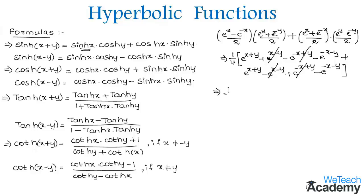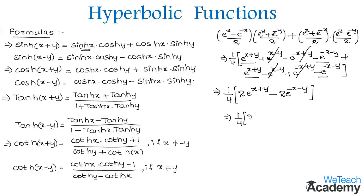We are left with 1/4 into e^(x+y) plus e^(x+y), which becomes 2 into e^(x+y). Then we have a minus sign, and by adding both the terms we get 2 into e^(-x-y). Taking 2 as the common factor, we get 1/4 into 2 into (e^(x+y) minus e^(-(x+y))).